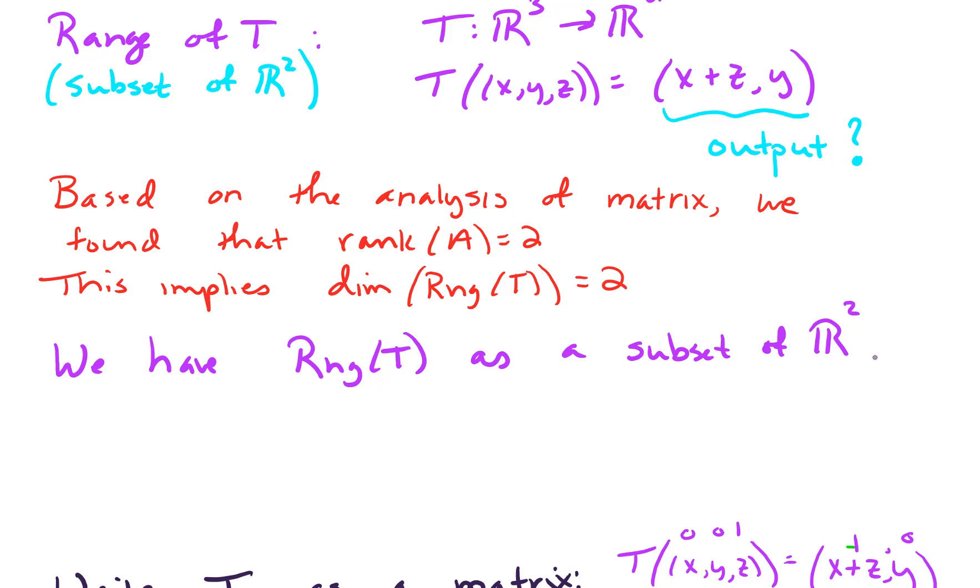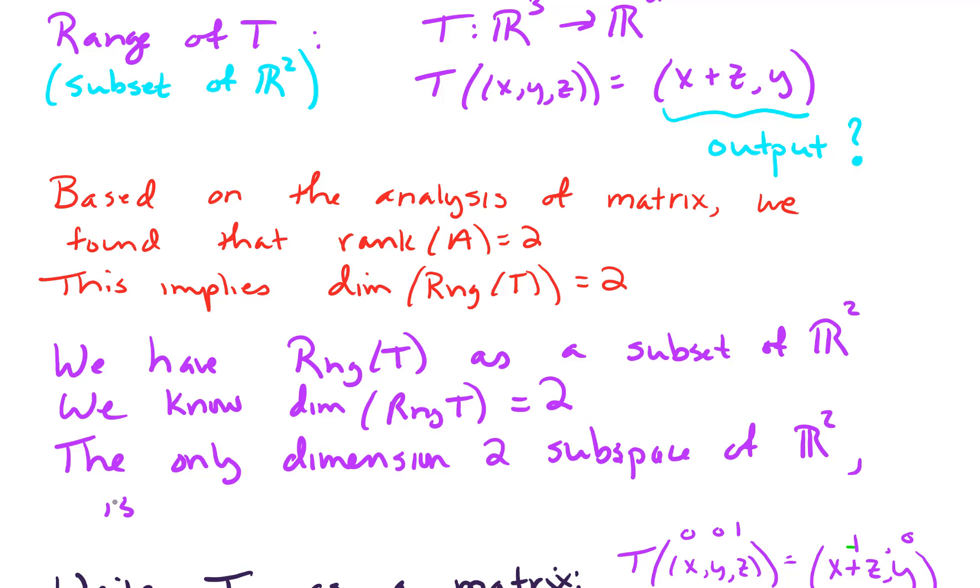So look, we have the range of T as a subset of R². We know that has to happen. We also know that the dimension of the range is 2. And the only dimension 2 subspace of R² is all of R². So that tells us that our range of T is all of R². There are other ways to determine that, but I think this is a really nice way of using some of the theory we've developed so far.